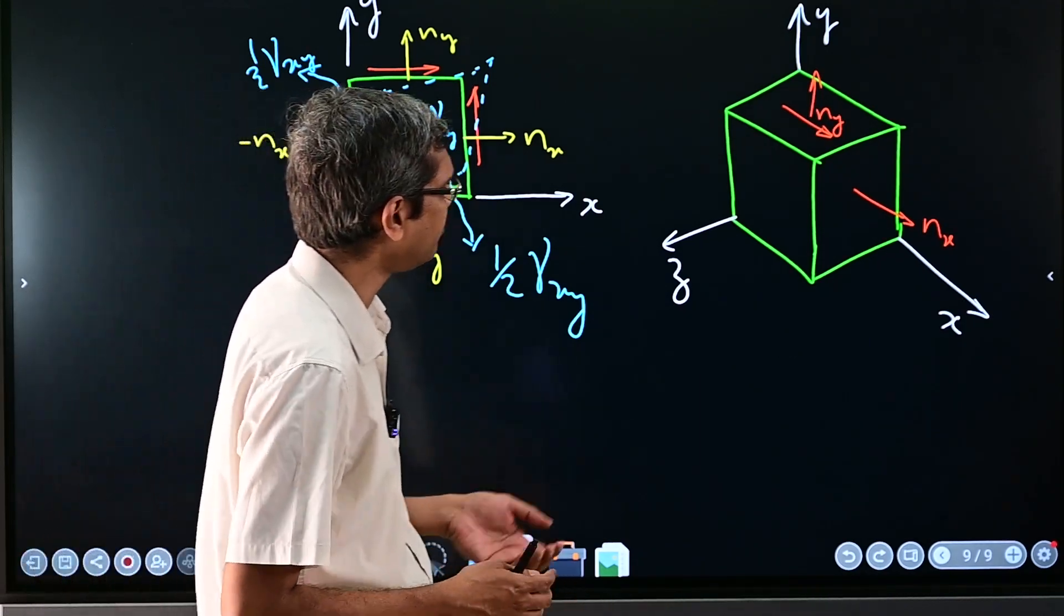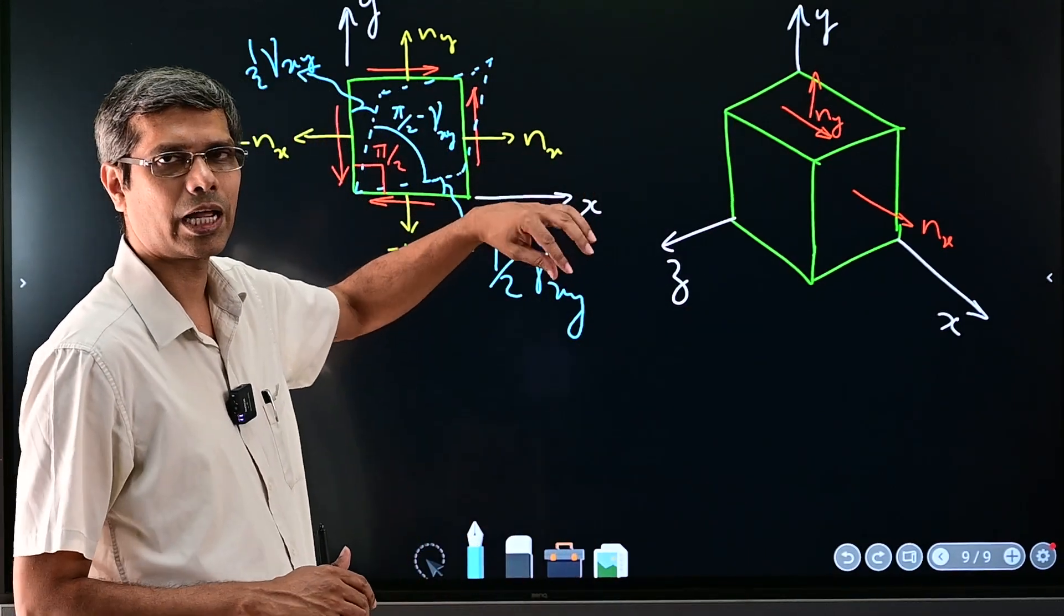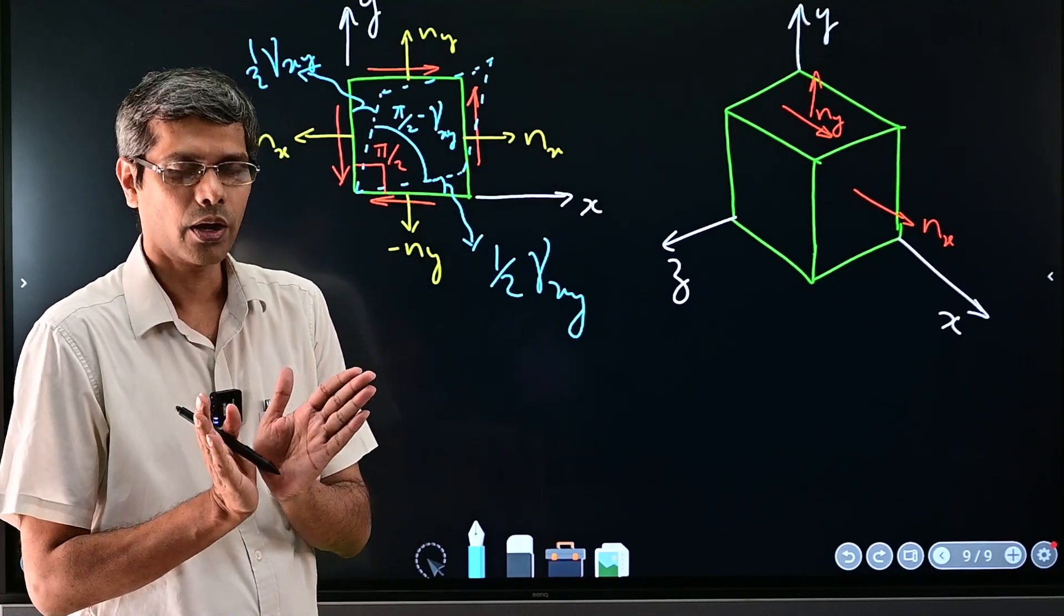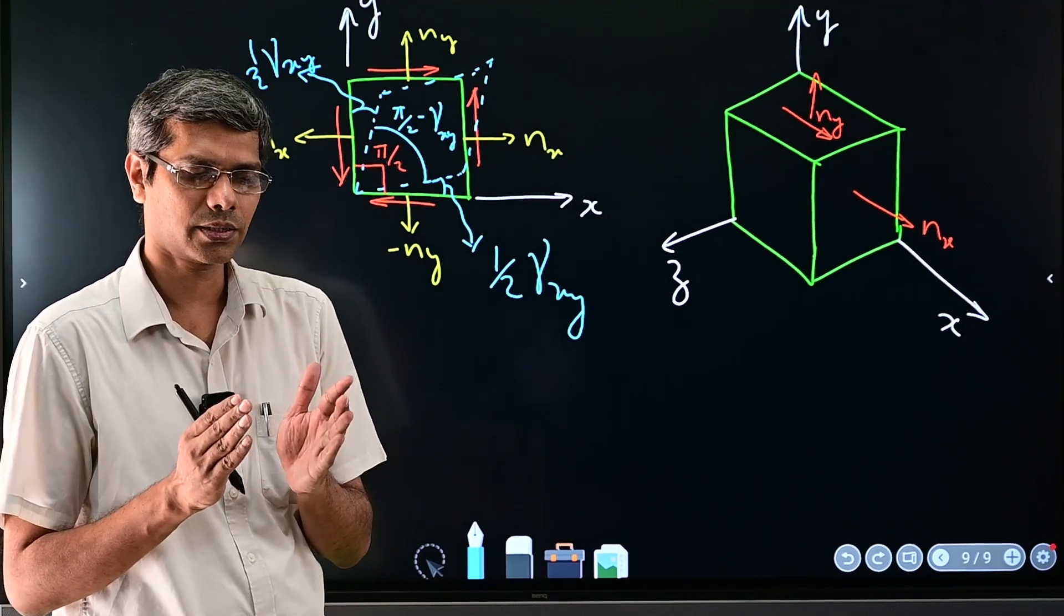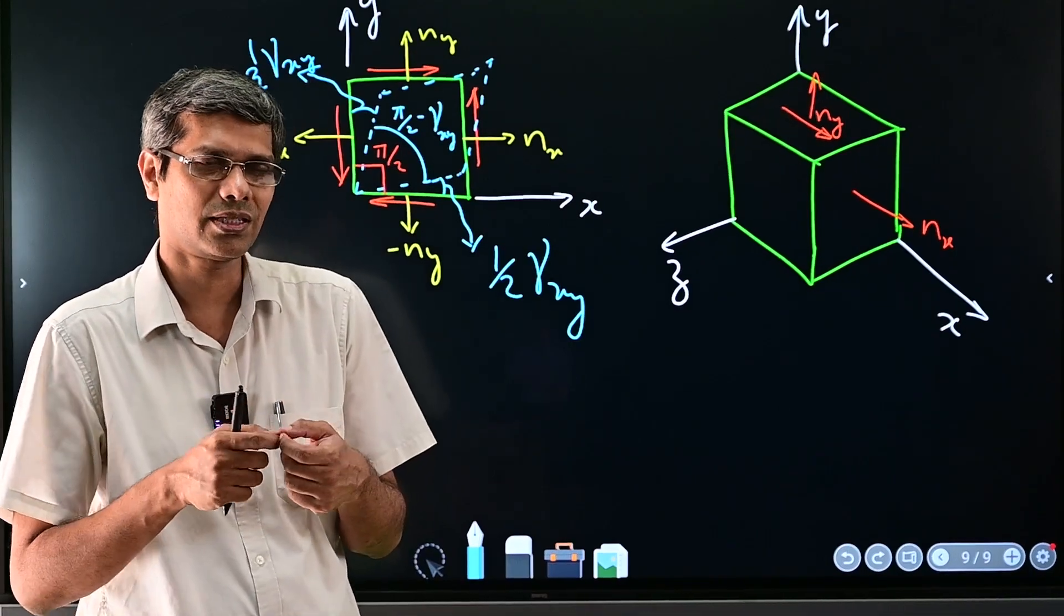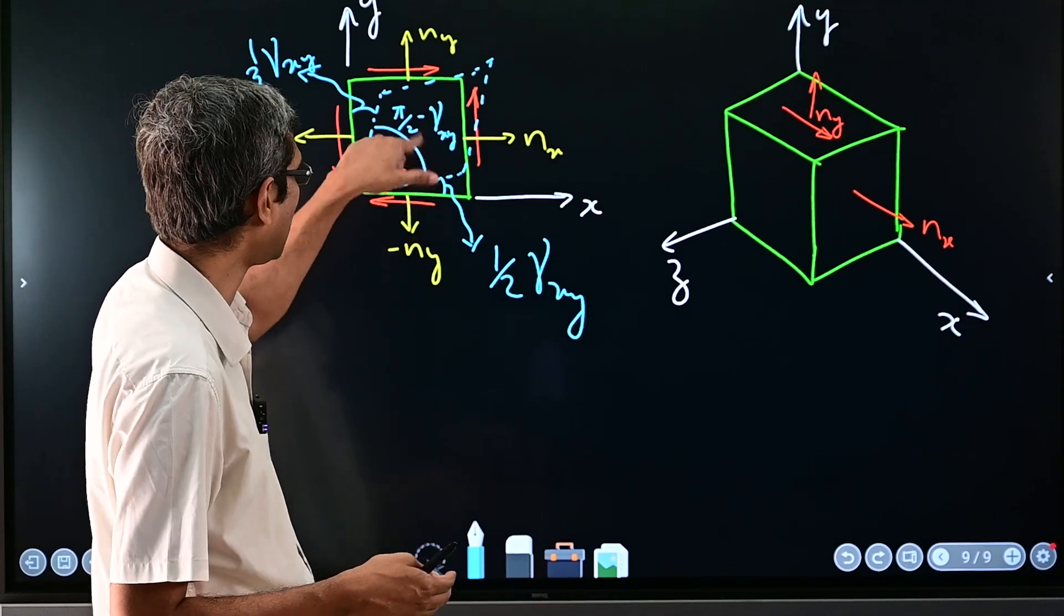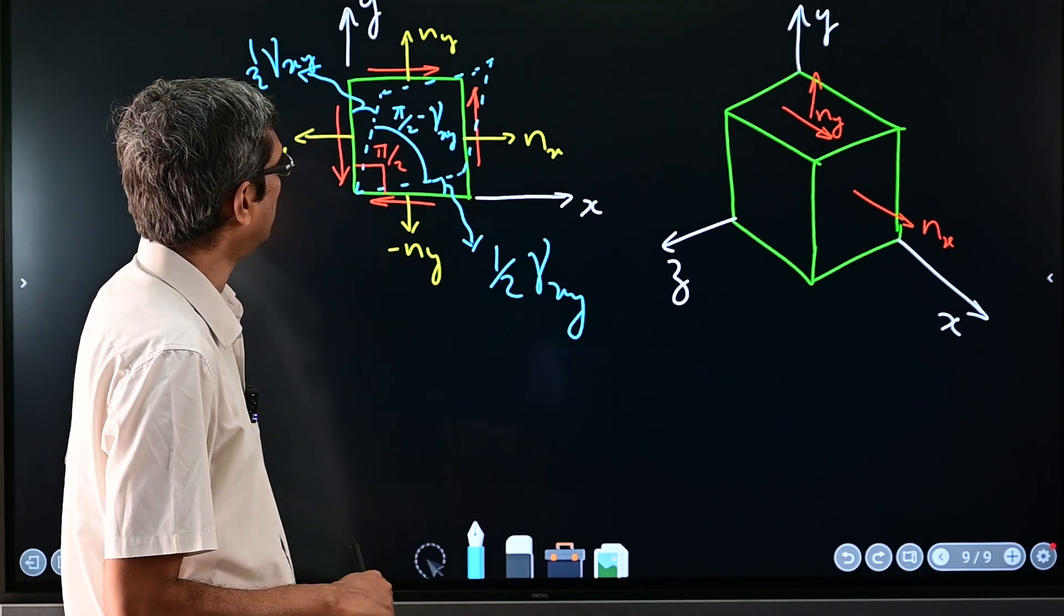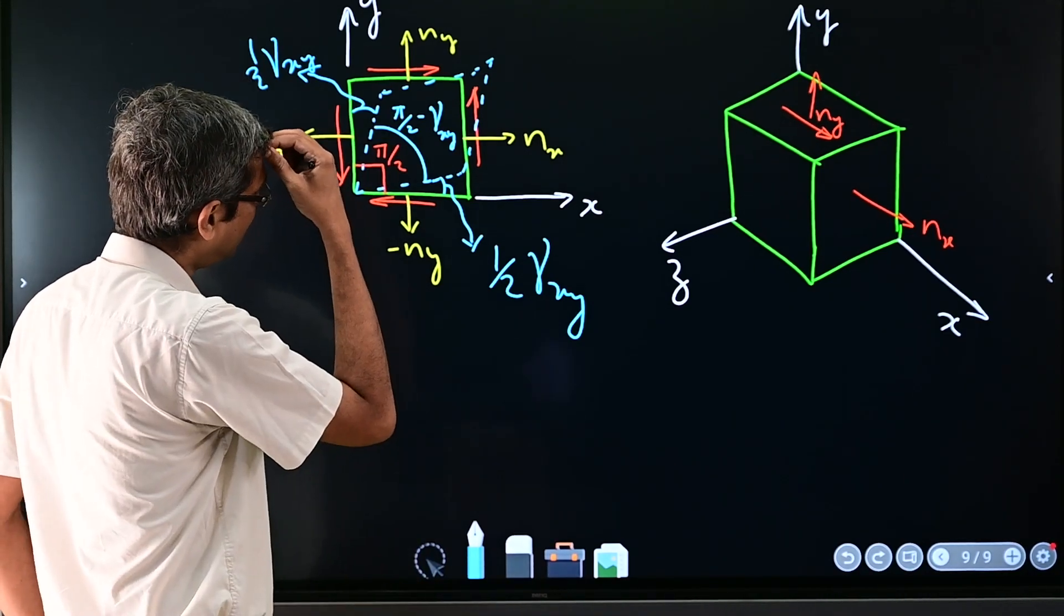In the same way you can actually think of gamma_yz and gamma_zx also. So just you have to take two planes in those directions initially which are at 90 degree, and then under the stress whatever you have applied, the angle which has changed from 90 degrees, so whatever has changed, so that angle is your strain in that particular direction.